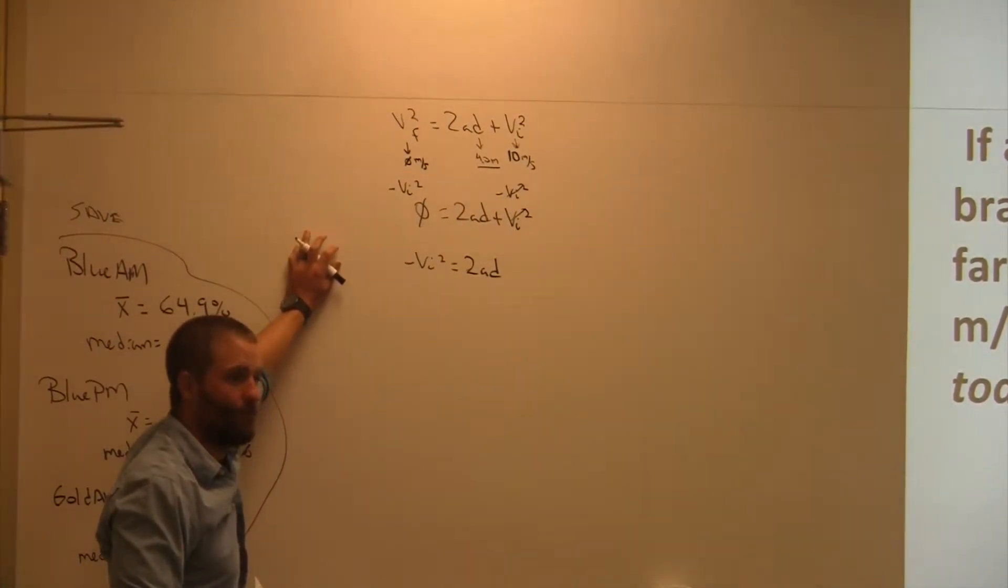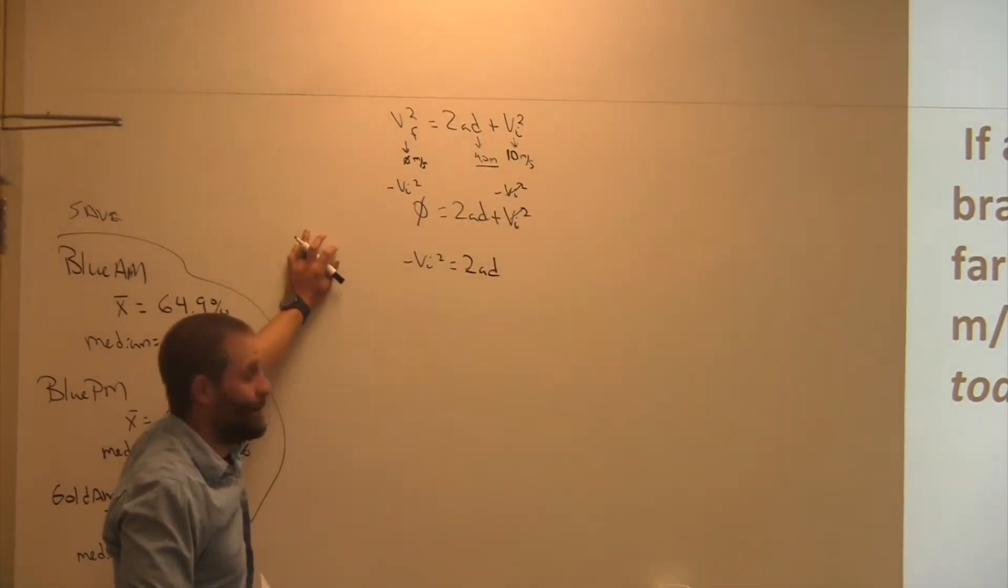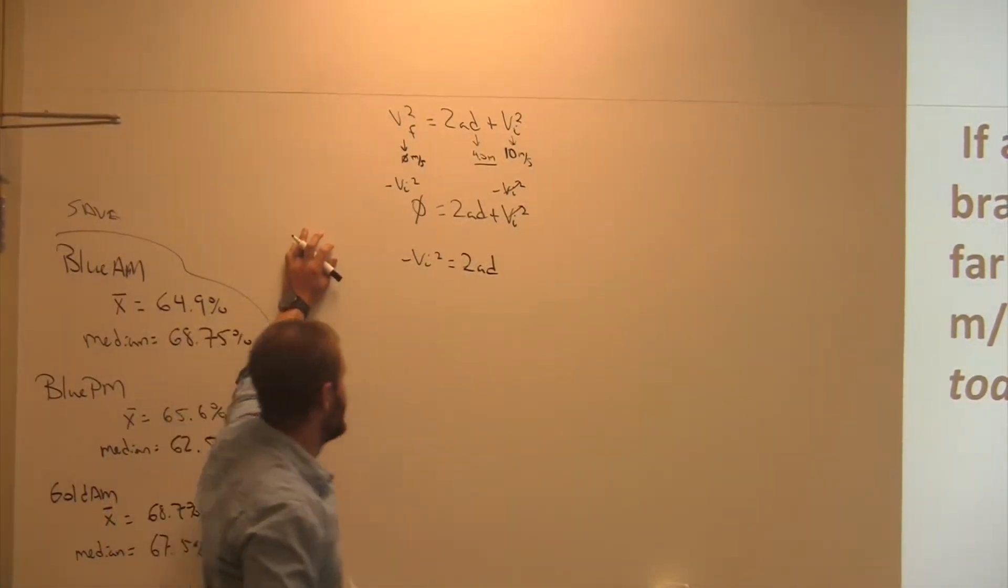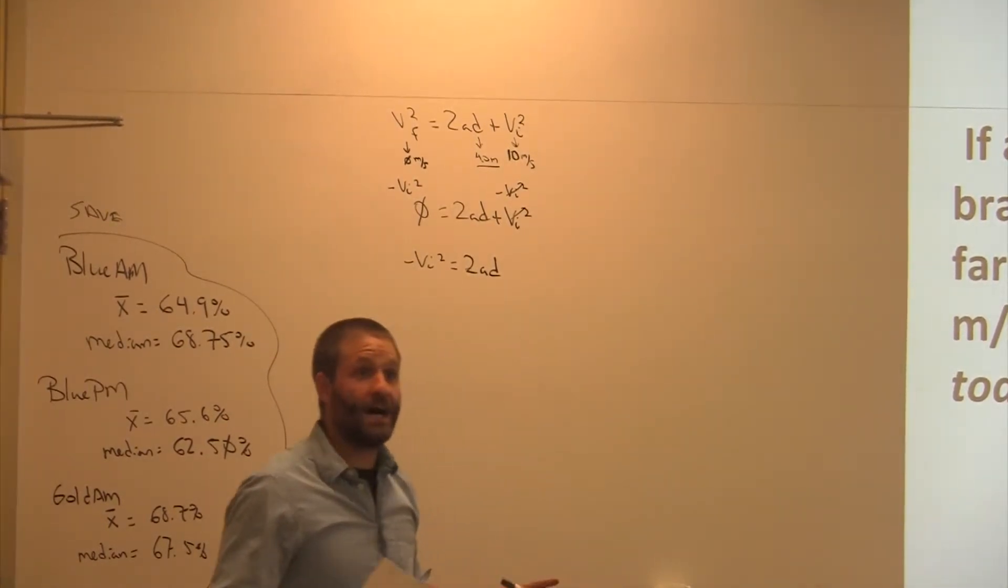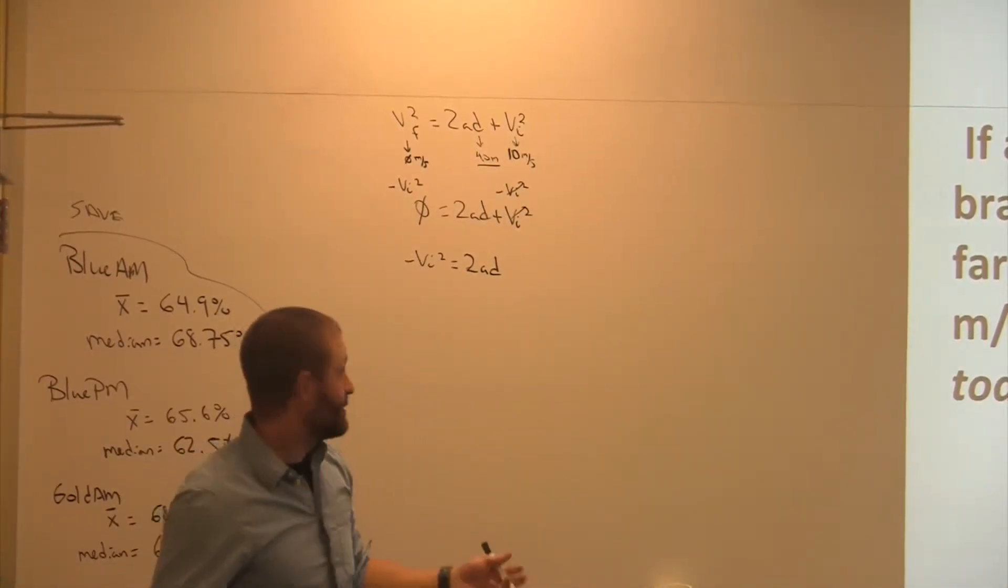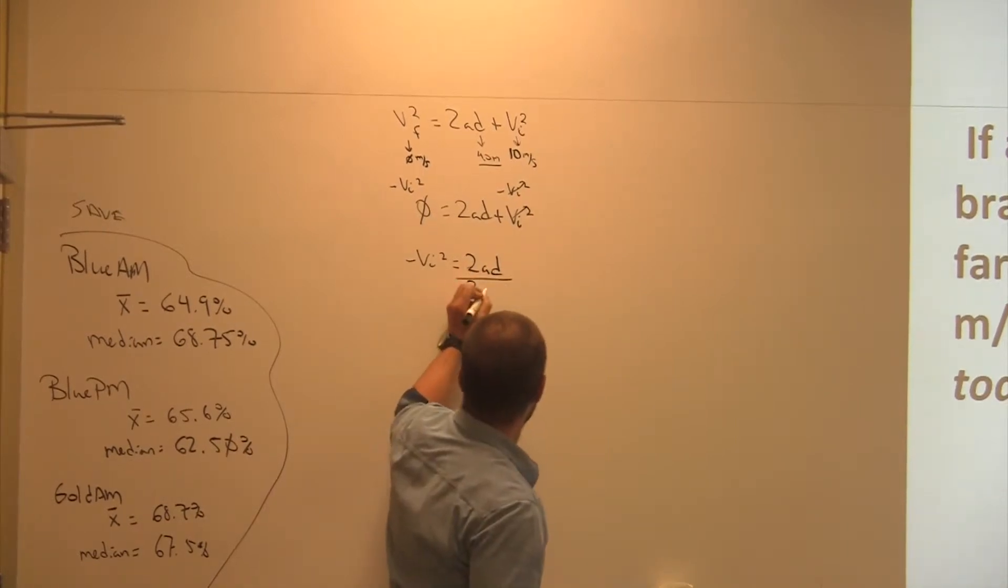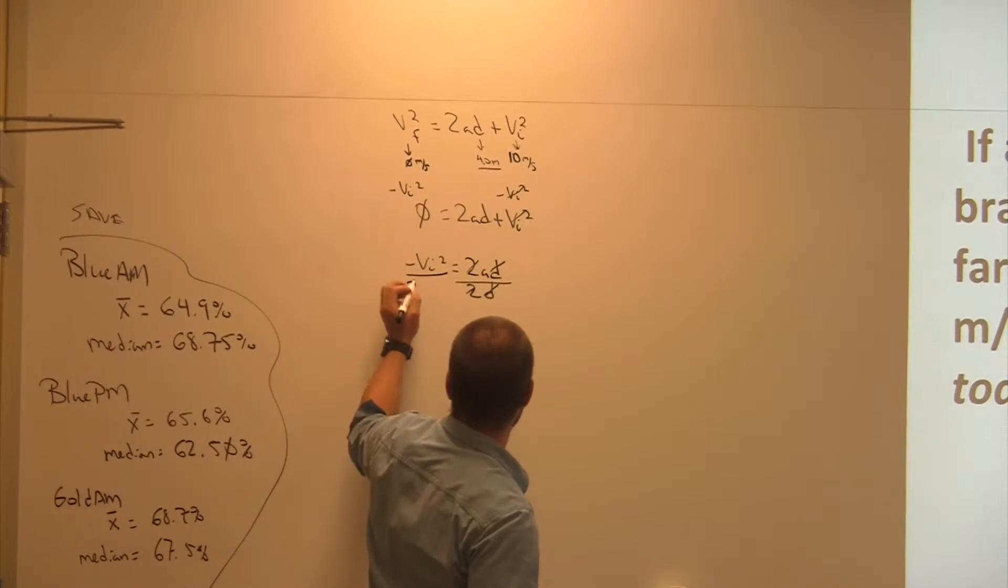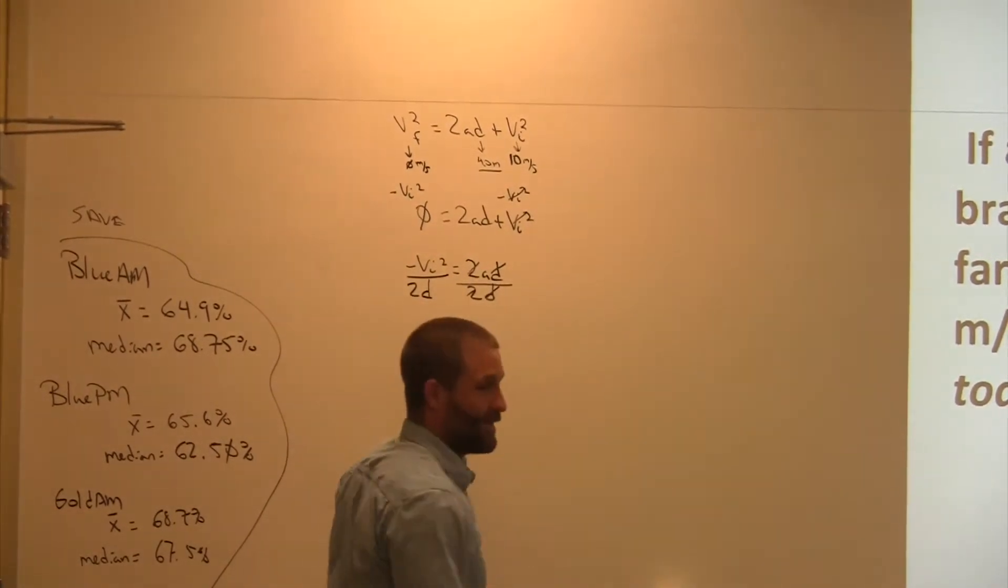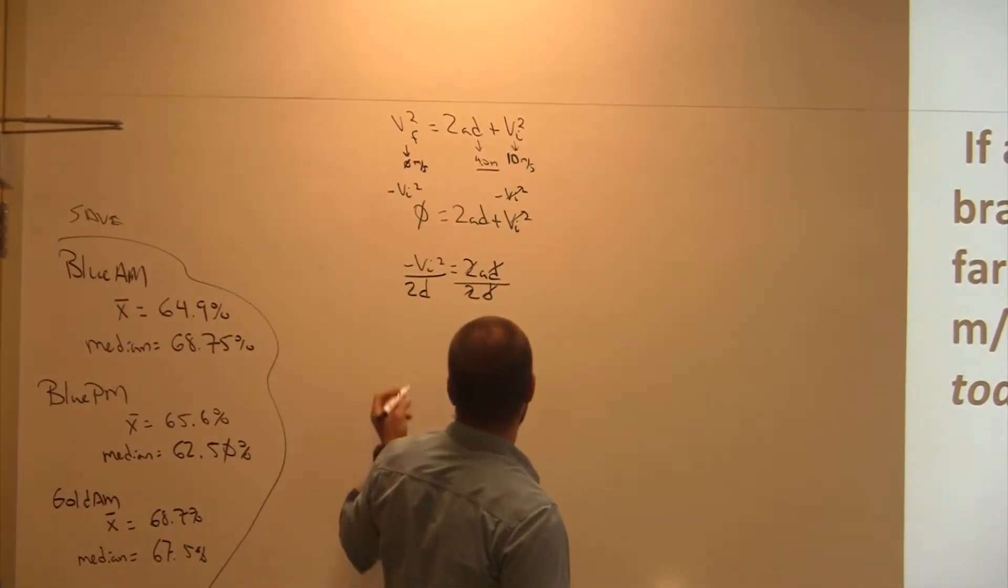Now what do I do? Divide by what? 2D. Remember, they're touching, they are multiplying. The opposite of multiplication is division. 2D, cancel, cancel, cancel, cancel. What you do on one side of mathematics, you have to do on the other side of mathematics.